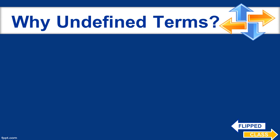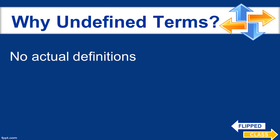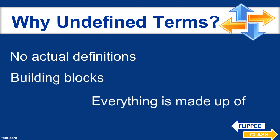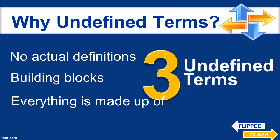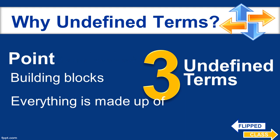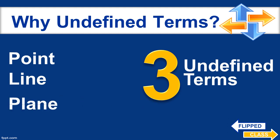Why are they called undefined terms? They are considered undefined terms because there are no actual definitions for these terms. But these are the building blocks of geometry and everything is made up of these. We have three undefined terms in geometry: the point, the line, and the plane.